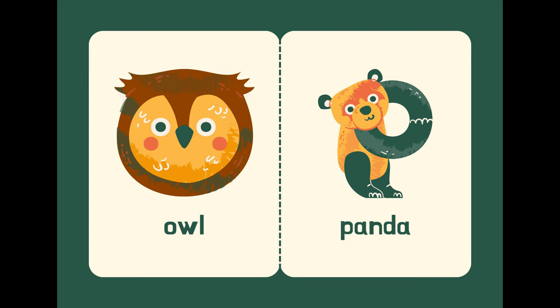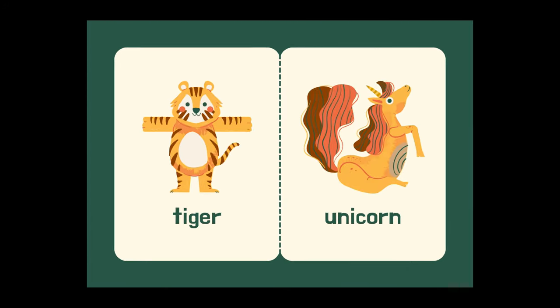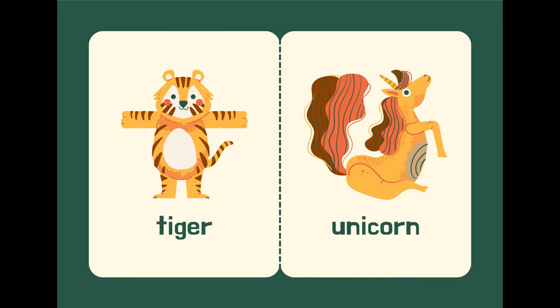P is for panda. Q is for quail. S is for squirrel. T is for tiger.